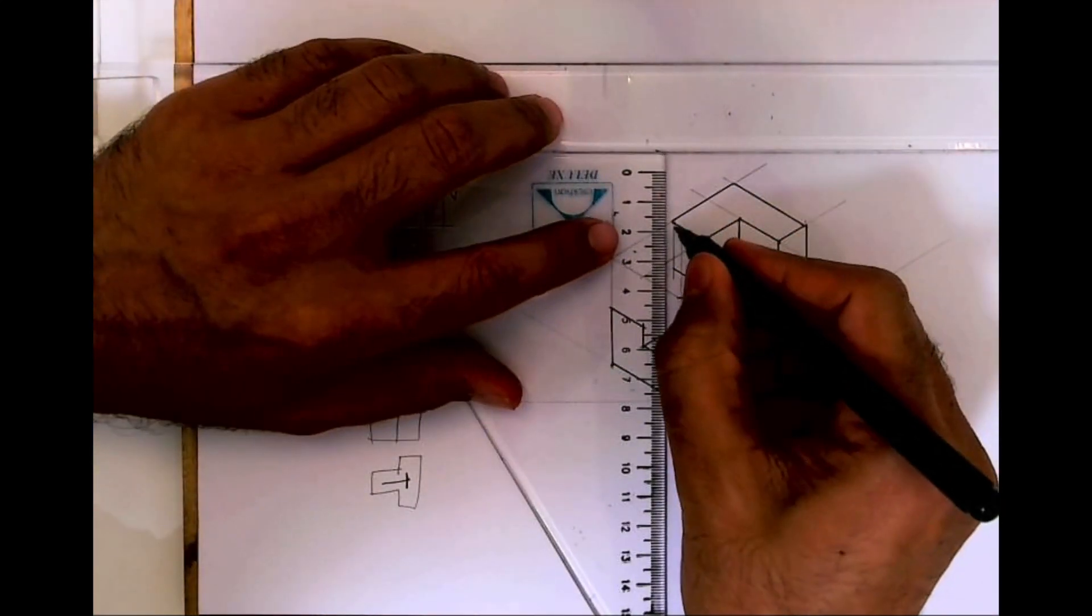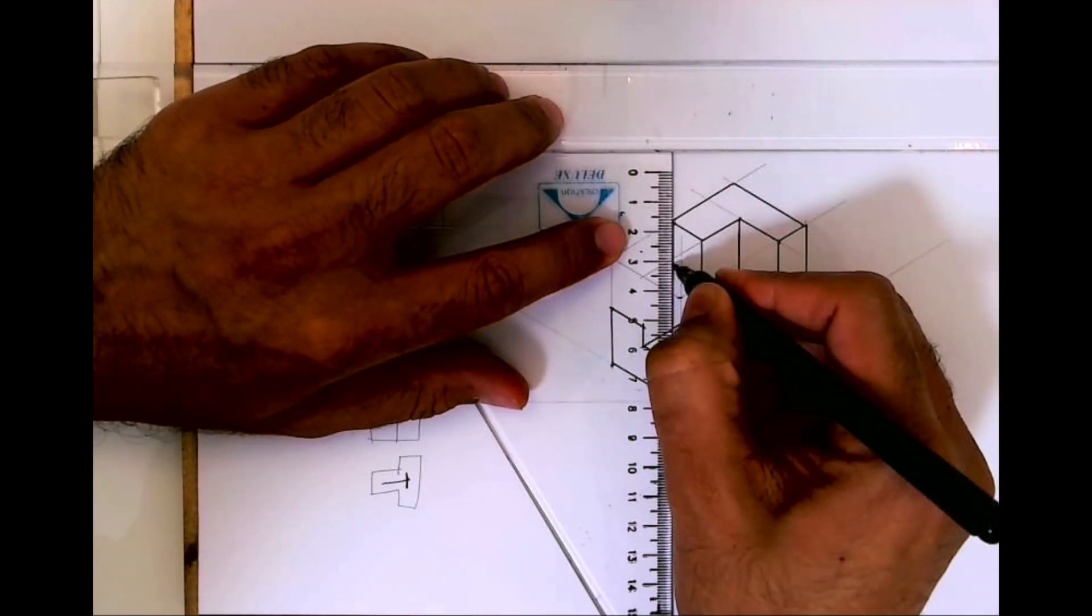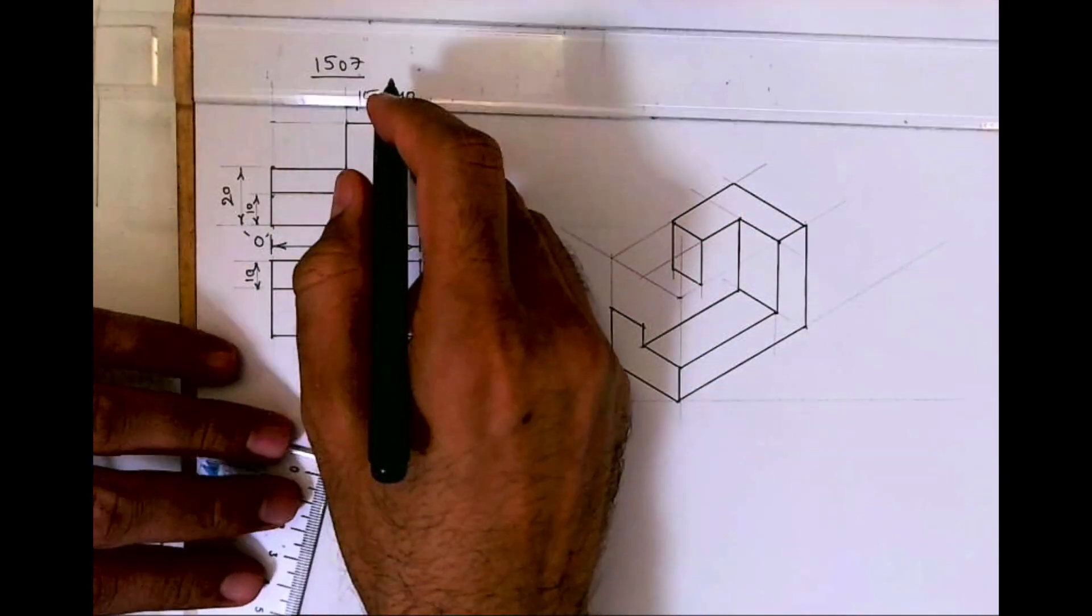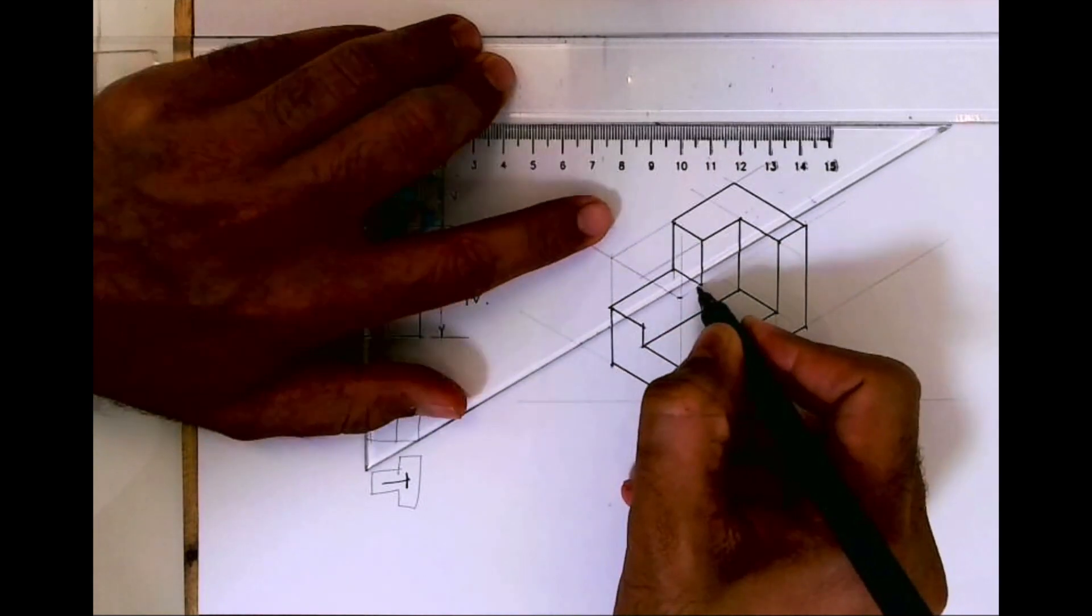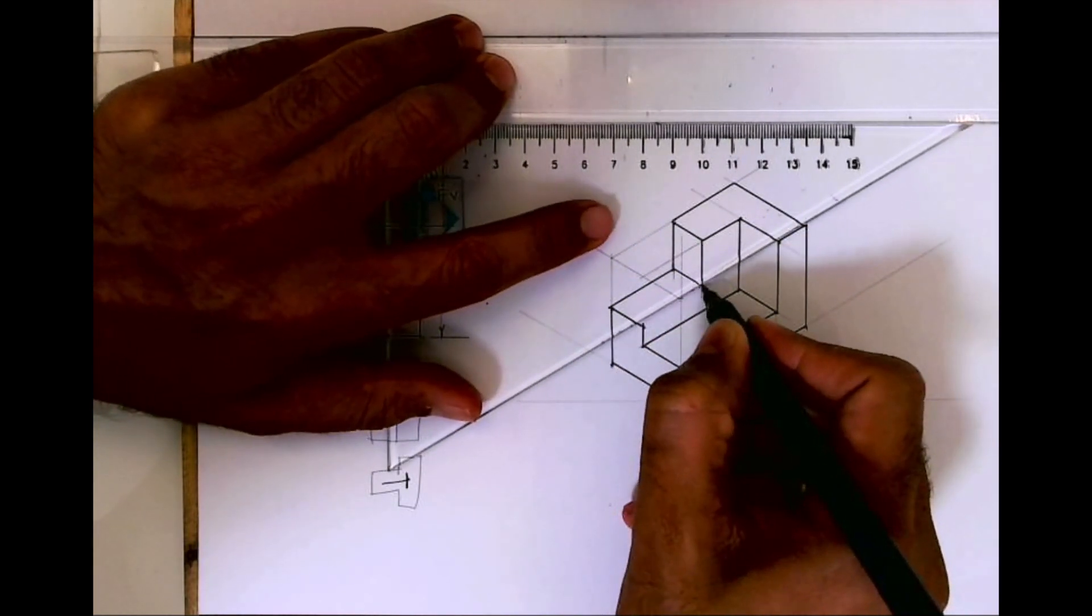This is how it will come. See this, and then you draw line from here and line from here.